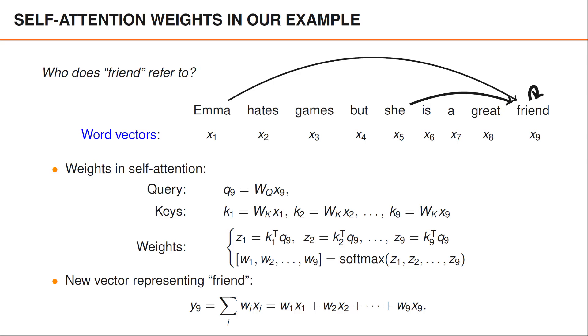We then use Softmax to obtain non-negative weights that sum to 1, and finally we obtain the new word embedding Y9 by taking the weighted average w1 times x1 plus w2 times x2 and so on.